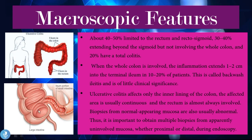The ileum is the last portion of the small intestine that connects with the large bowel. In some patients with ulcerative colitis, in addition to the colitis affecting the first portion of the large bowel, it may also affect the last portion of the small bowel. Ulcerative colitis affects only the inner lining of the colon, and the affected area is usually continuous — the rectum is almost always involved. This is different from Crohn's disease, which has skip lesions affecting non-continuous parts. Biopsies from normal-appearing mucosa are also usually abnormal, so it is important to obtain multiple biopsies from apparently uninvolved mucosa during endoscopy.